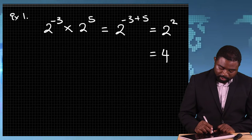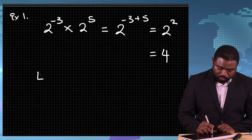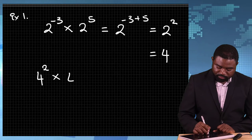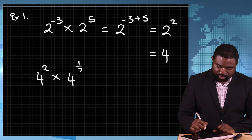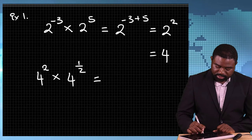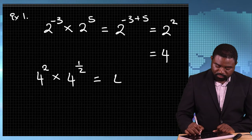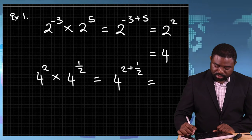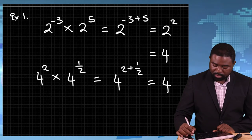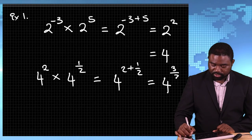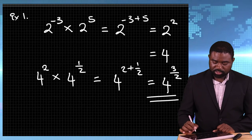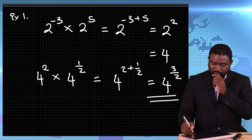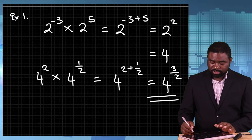Similarly, if we have 4 raised to the power 2 multiplied by 4 raised to the power half, this is the same as 4 raised to the power 2 plus half, which is the same as 4 raised to the power 3 over 2. This is a fractional power and we will deal with it later.